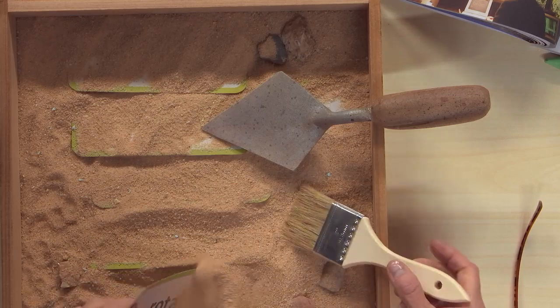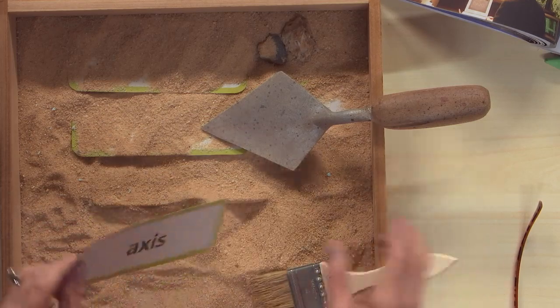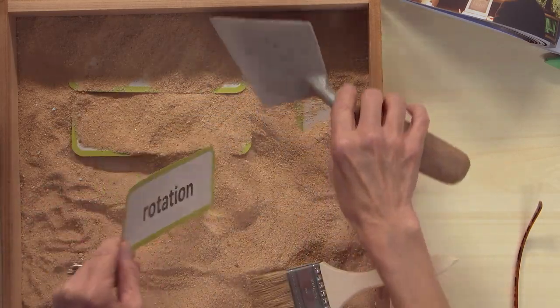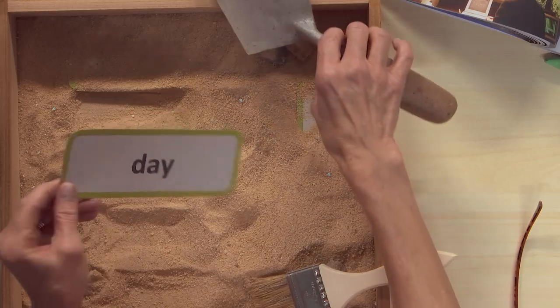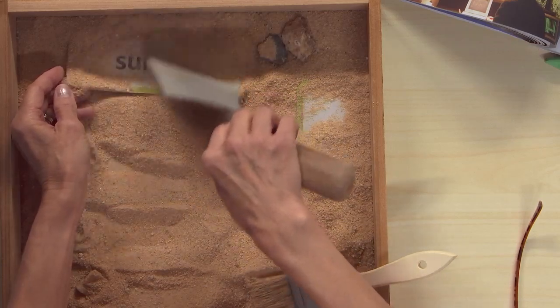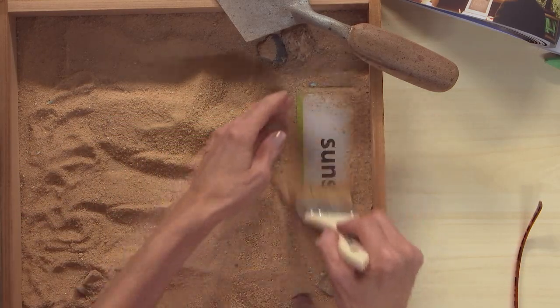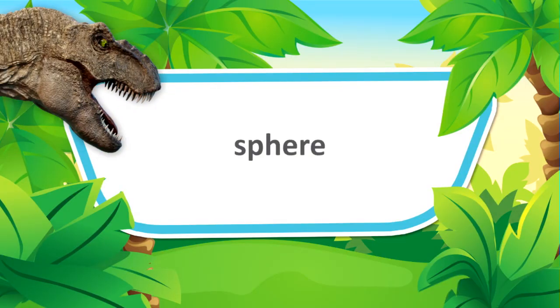Right now, let's excavate our vocabulary. We have the words rotate and axis. Here is the word rotation. Day. Sunrise. And sunset. You'll also be seeing this word today: sphere.